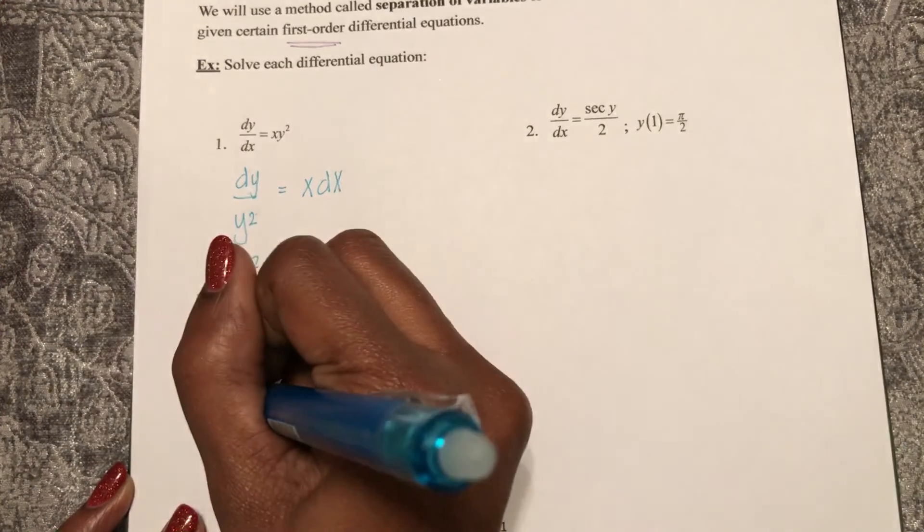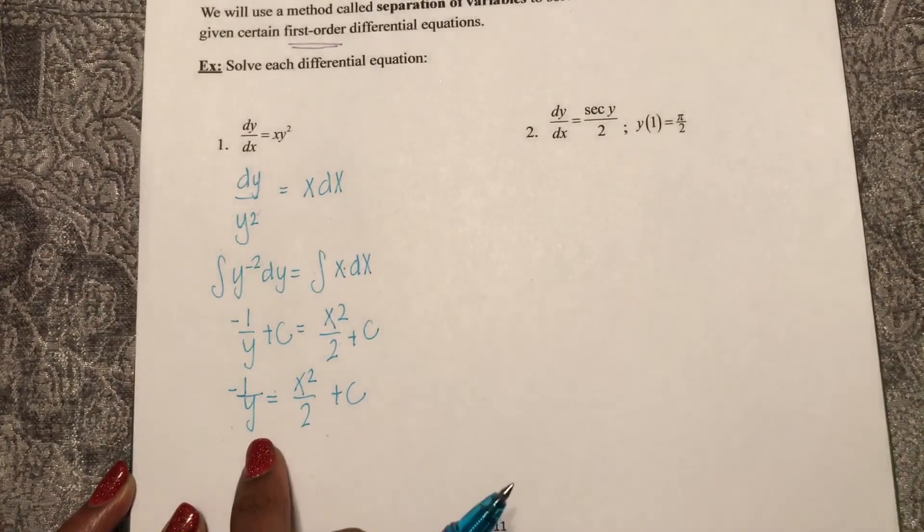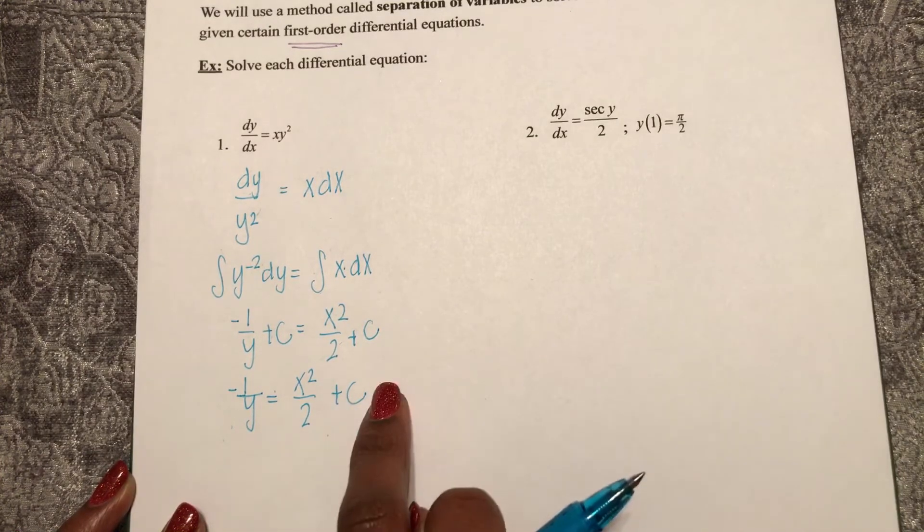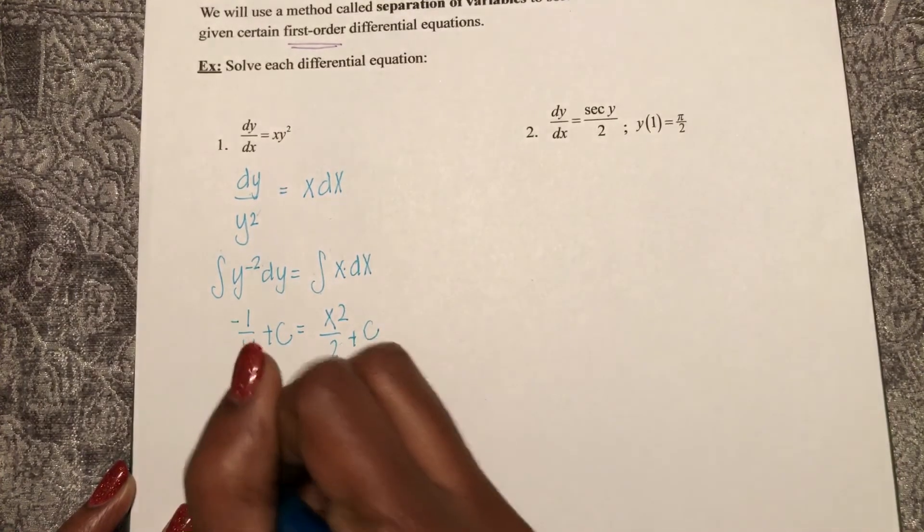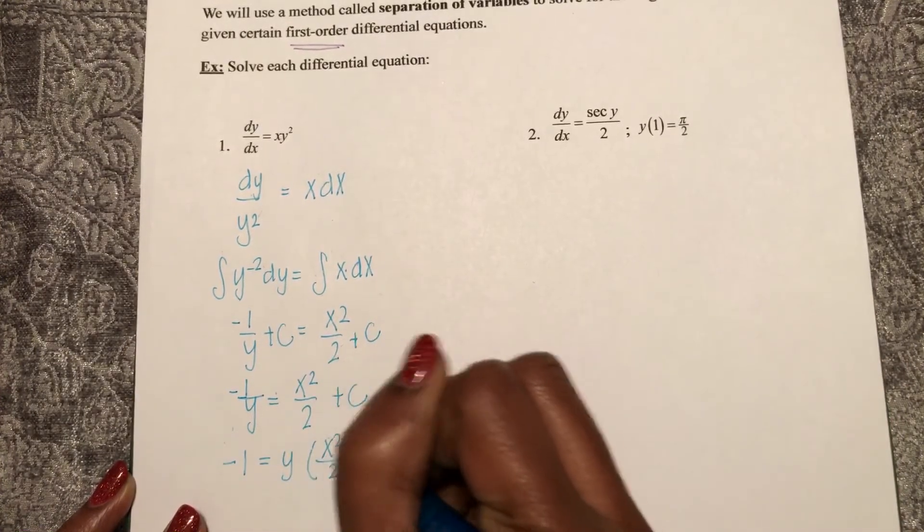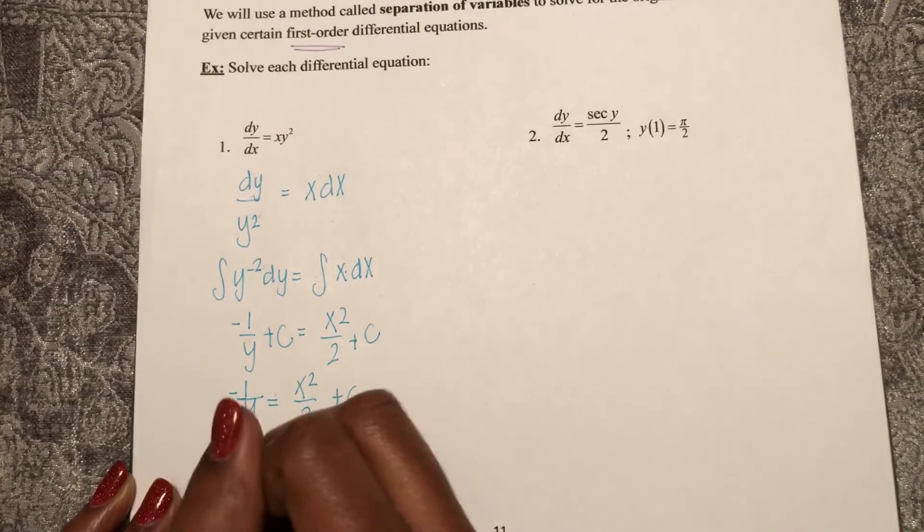Now how can I solve this for y? I am going to multiply y to this side. So I have negative 1 equals y multiplied by this stuff. And then I'll divide that side.